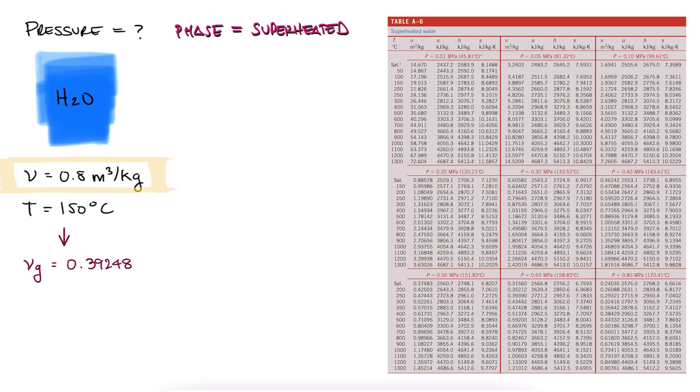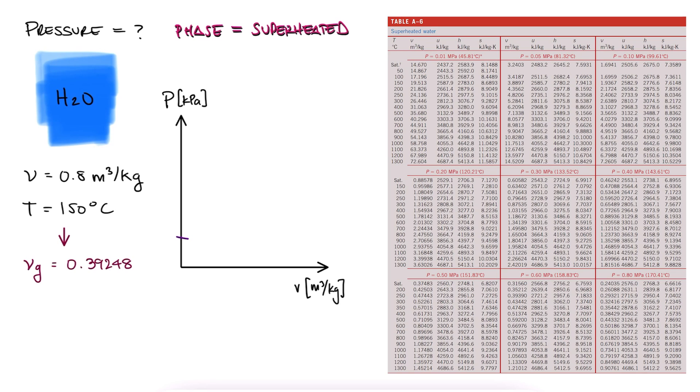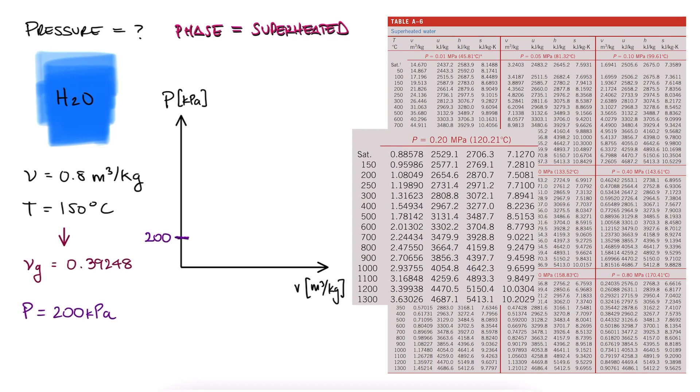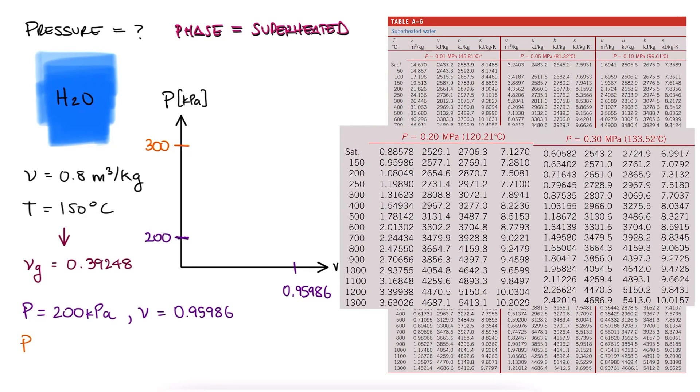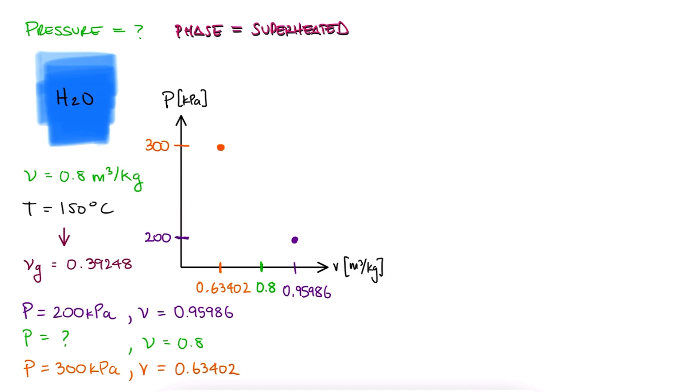The two pressure subtables that have a specific volume value that is around 0.8 are the 200 kilopascal one with a V equal to 0.96 and the 300 kilopascal one with a V equal to 0.63. These are above and below 0.8. Therefore, we know that our pressure must be between 200 and 300.